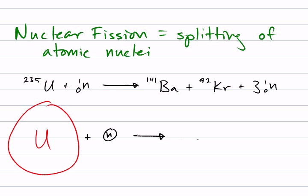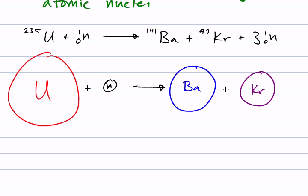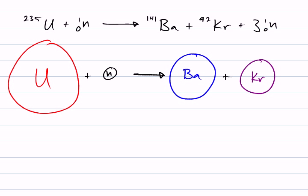This will cause the uranium nucleus to break apart into a smaller element, barium, and another element, krypton, as well as—and of course it releases the three extra neutrons.